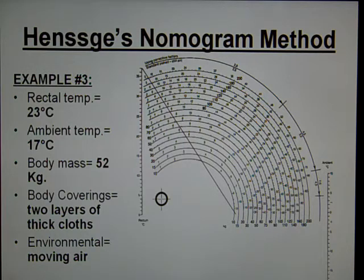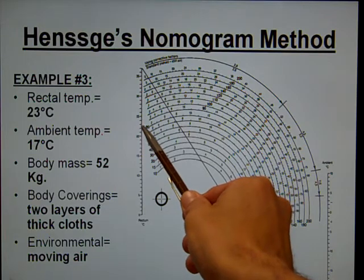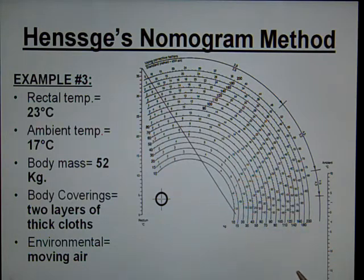The first thing we need to do is connect a line between the rectal temperature and the ambient temperature. So the rectal temperature is 23 degrees. I'm going to connect a point from 23 over to 17, and in this example we'll use blue.